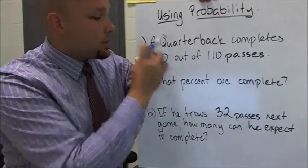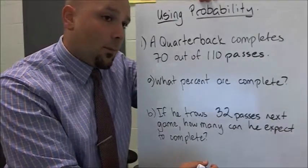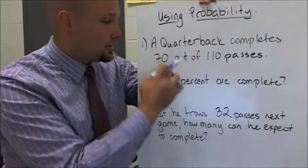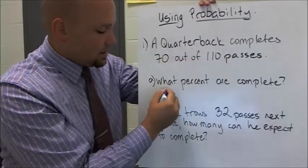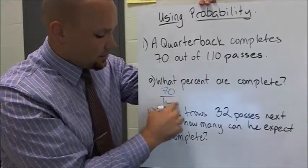For example, a quarterback completes 70 out of 110 passes. So first, what percent are complete? Well, 70 out of 110, the probability is 70 out of 110.